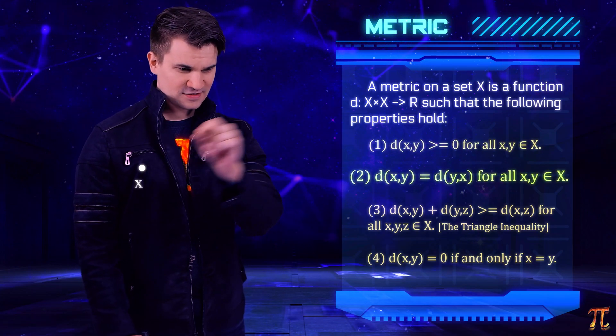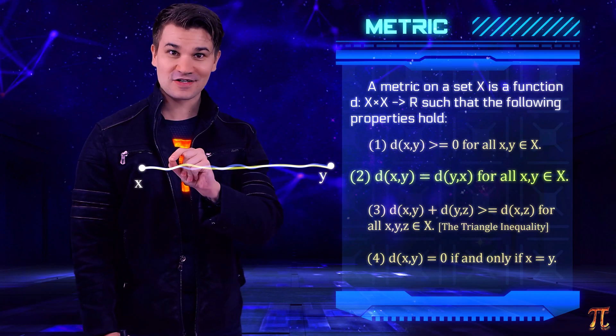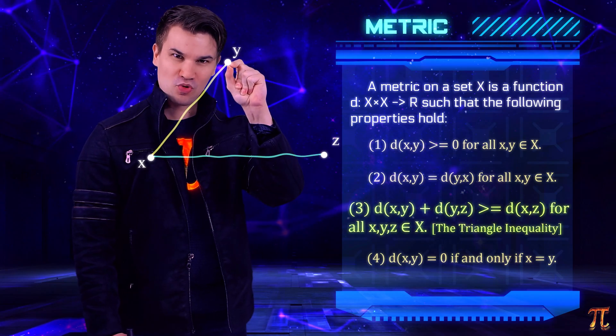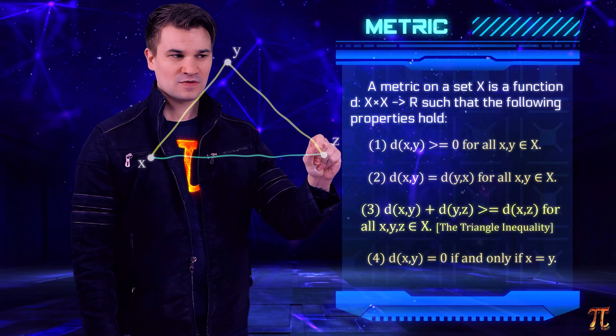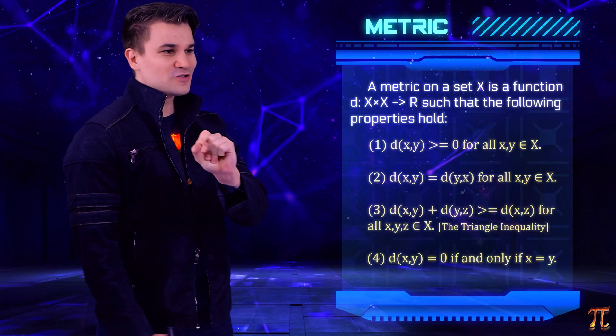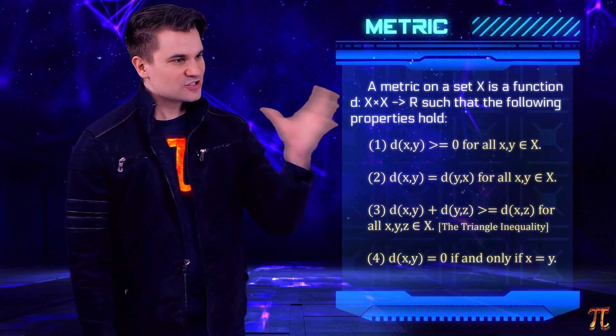The distance from a place to another place should be the same as the distance from that place back. We can't take a detour to another point and then shorten our distance to our destination. And the distance from a place to itself is zero. Well, it turns out that this definition, while very nice and beautiful, actually has some redundancy.